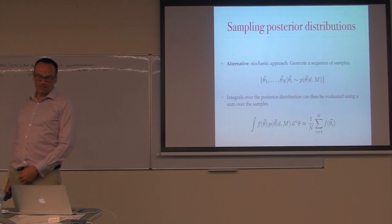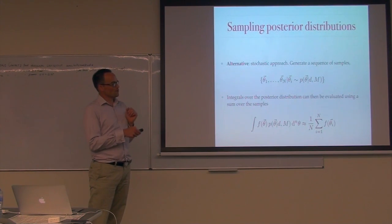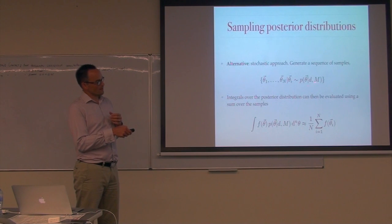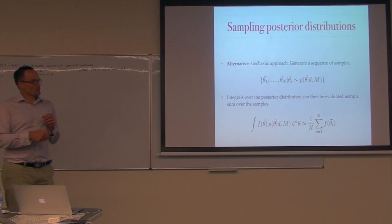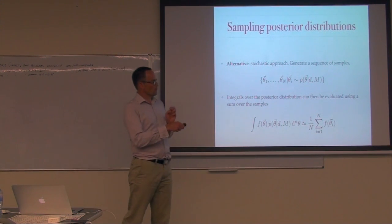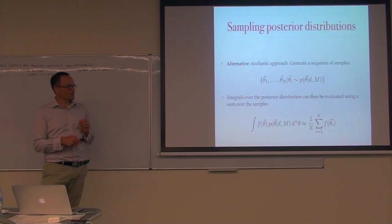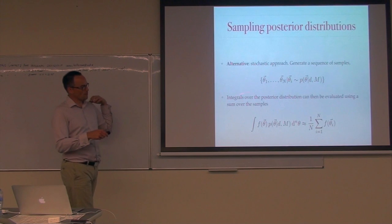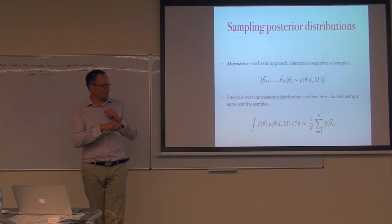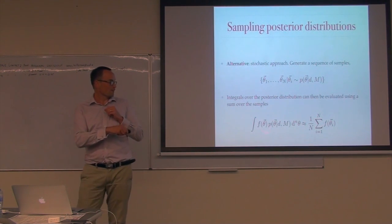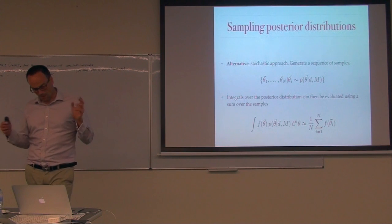In high dimensions you tend to use stochastic methods. The idea is to generate a bunch of samples drawn in proportion to the thing you're trying to represent — the posterior distribution. If you can do that, you can do everything you might want to with the posterior, including calculating expectation values by doing integrals using a sum over these samples: the integral of f(θ)p(θ) is approximated by a sum of the function evaluated at each sample point, divided by the number of points.